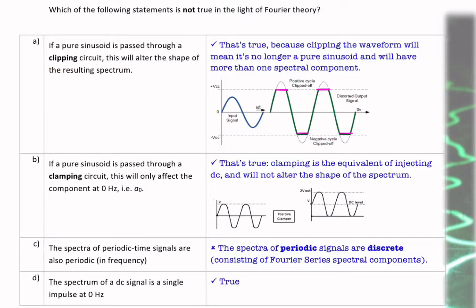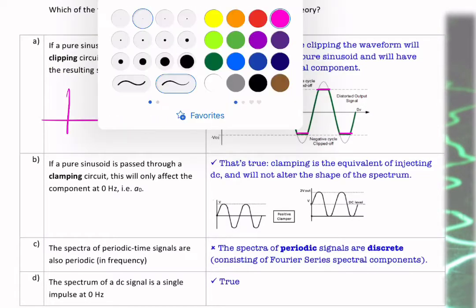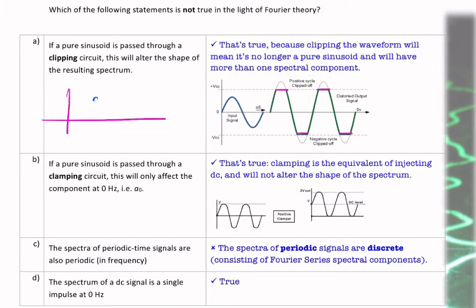So the resulting spectrum, the spectrum of a sine wave looks something like this. That's the spectrum of a sine wave. But if we distort the sine wave by introducing, or by clipping it, we will necessarily have high frequency components. So we'll have something going on at 2f0, 3f0, etc. So that will alter the shape of the resulting spectrum.